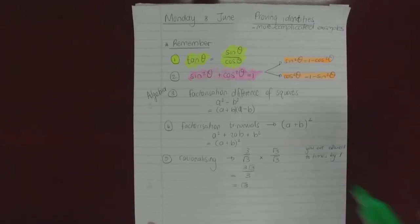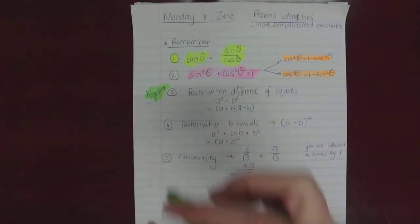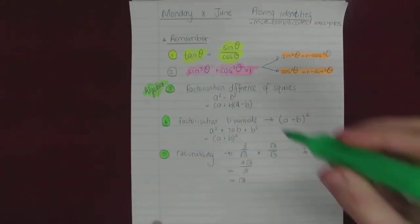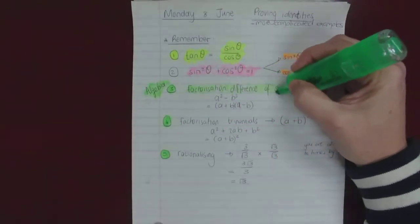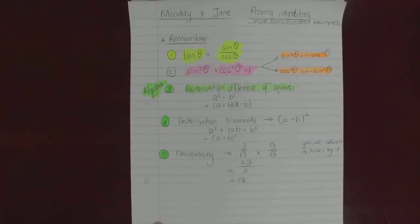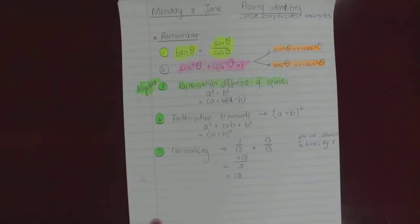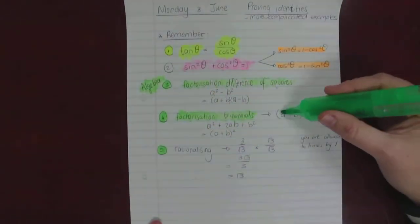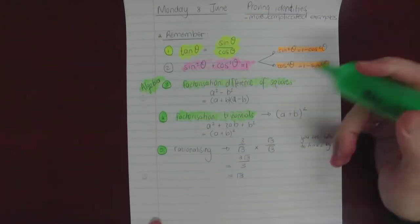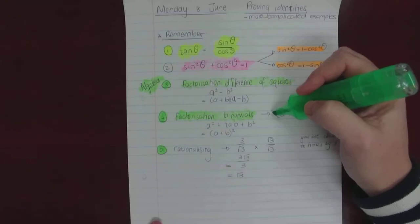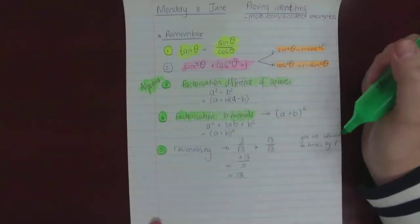Taking you back to algebra — the stuff you have to think of when working with trig as well, because it's not something you can just switch off. The most common is difference between squares. So if I have a squared minus b squared, it's a two-term expression with a negative, with positive coefficients and even exponents: a plus b times a minus b. Factorizing trinomials — specifically, if I have a plus b squared, I have a squared plus 2ab plus b squared, which factorizes into a plus b, times a plus b, or a plus b squared.